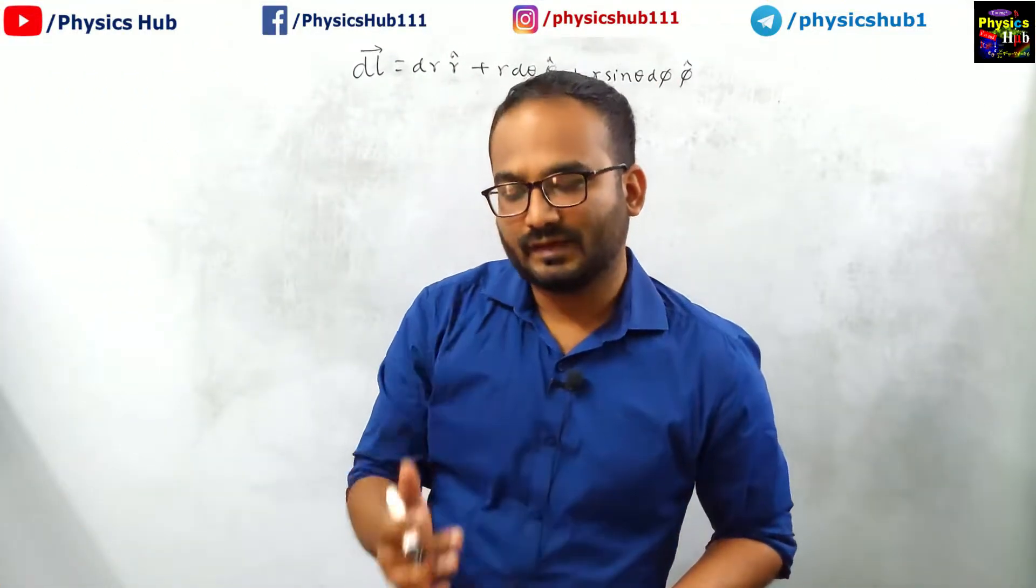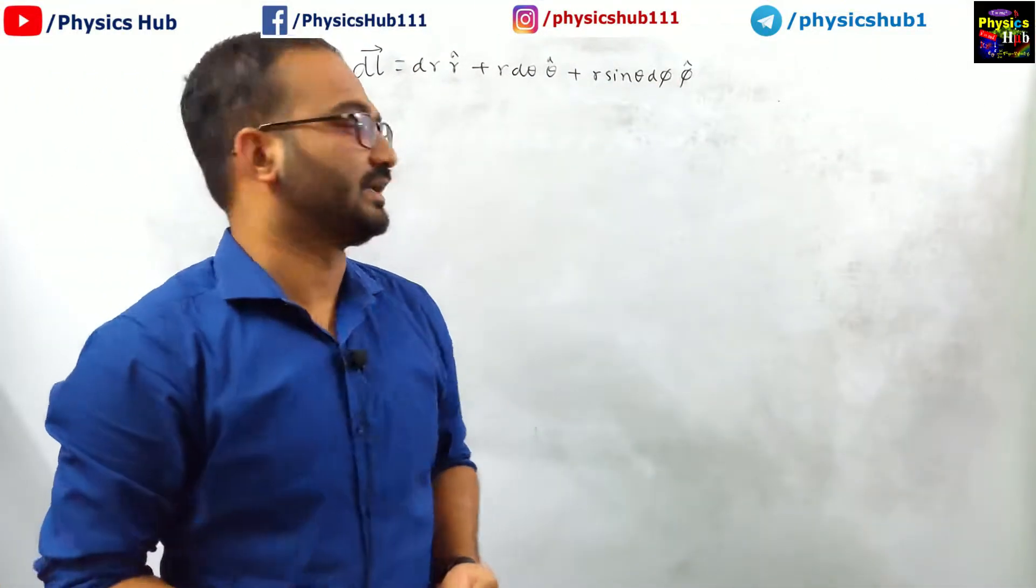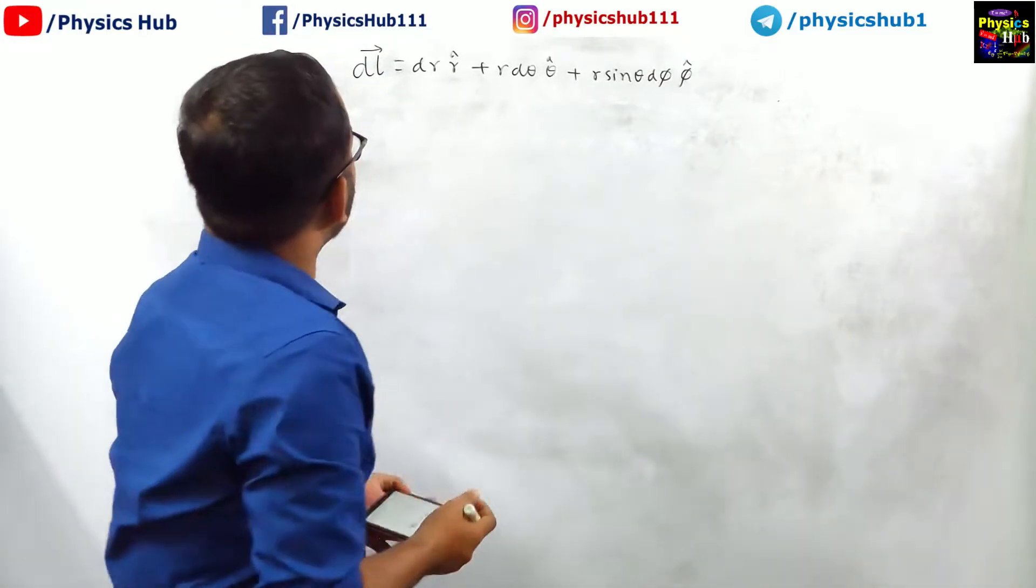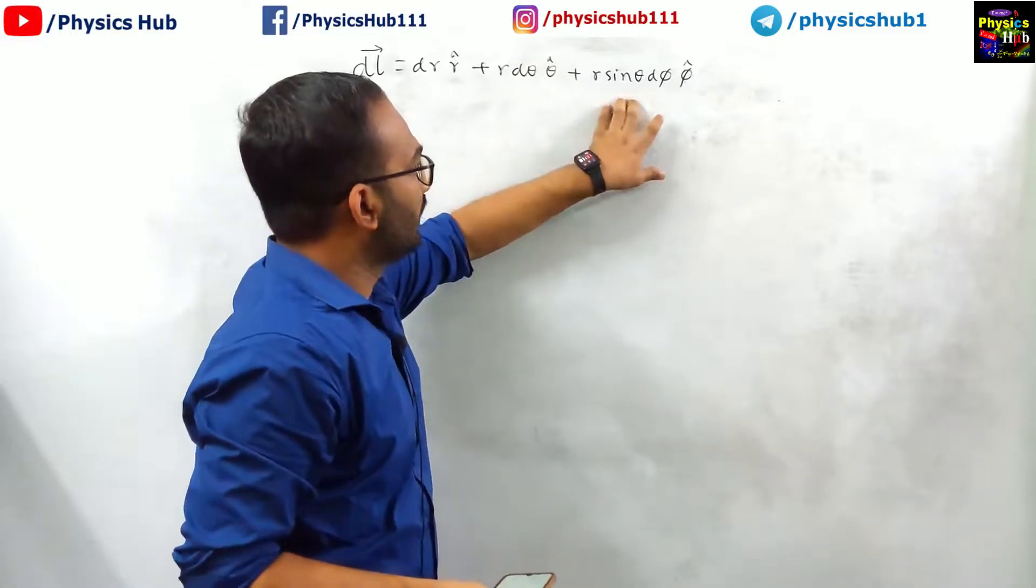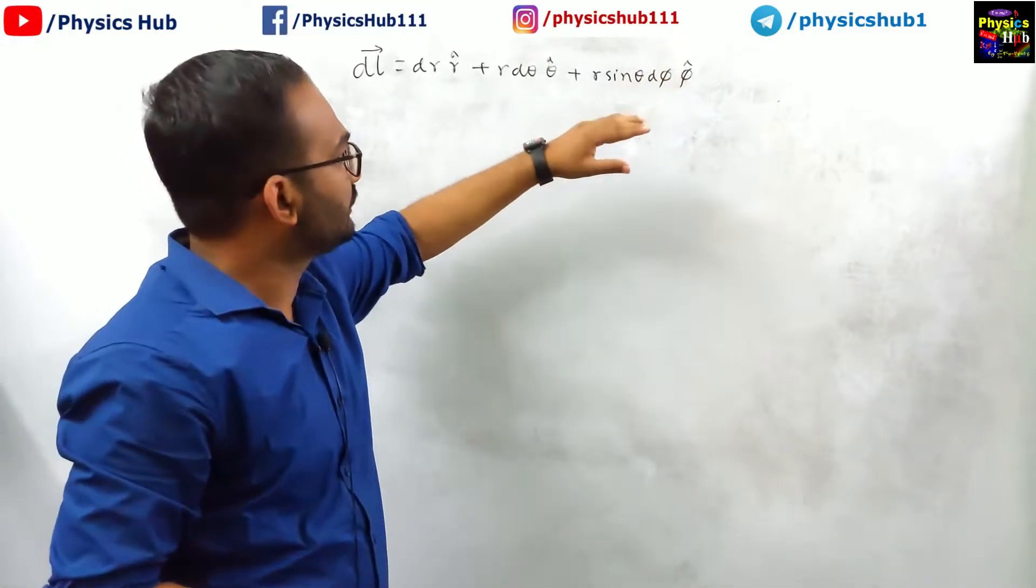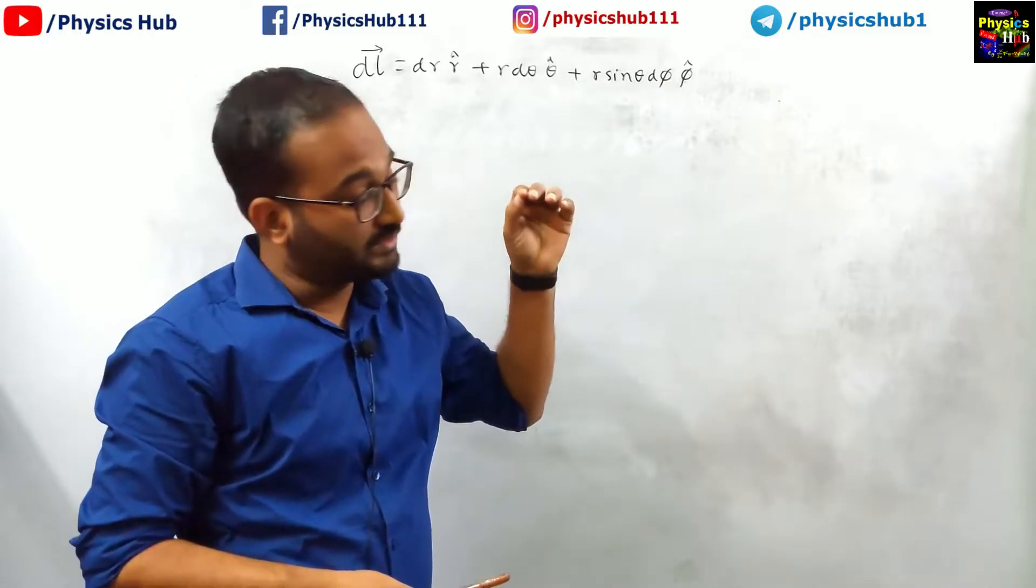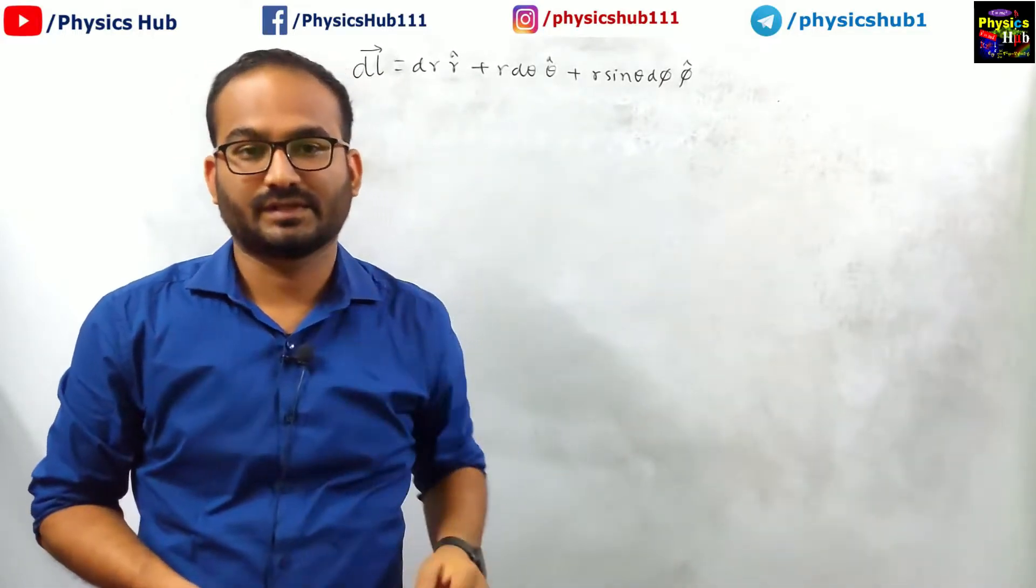Let us now talk about the surface element in spherical polar coordinate. We have got the line element dL as dr r cap plus r d theta theta cap plus r sin theta d phi phi cap. This we will require to understand the surface element in spherical polar coordinate.